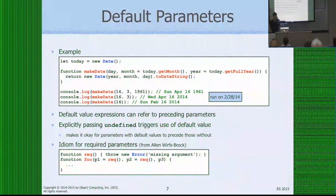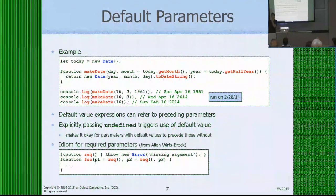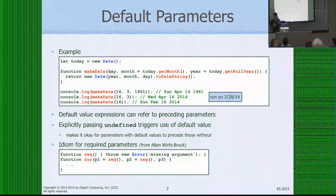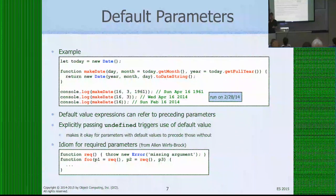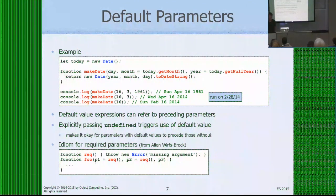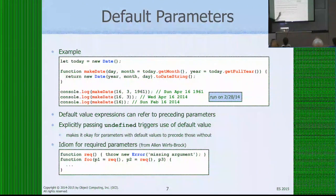An interesting thing is that default value expressions can refer to earlier parameters, so the default can be based on another parameter. You can also explicitly pass `undefined` for a parameter to get the default value — suppose I wanted the default for month but wanted to specify the year. If the month was `undefined`, it would use the default value. This makes it okay to have parameters with default values before ones that don't have defaults, which most languages don't allow. You can even make a parameter required by setting its default to a function call that throws an error.